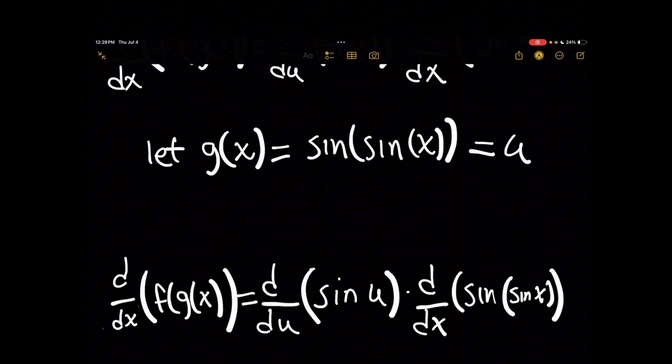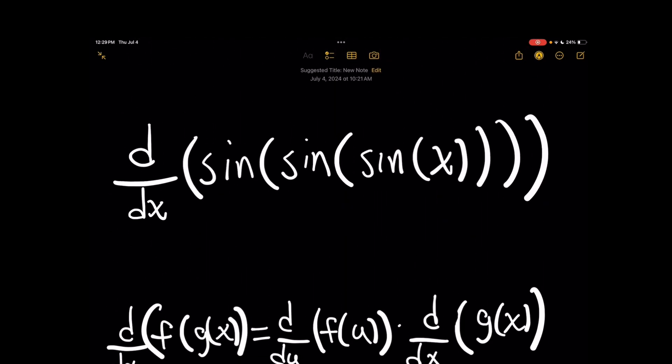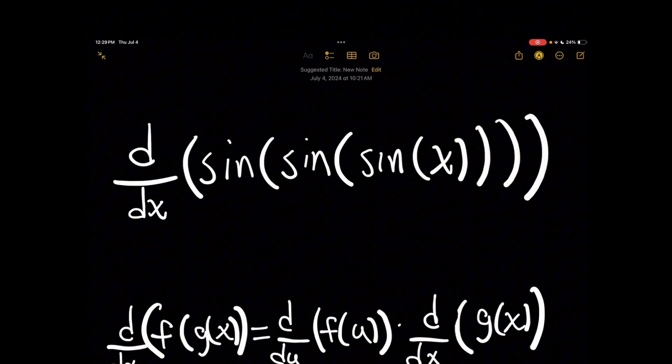So we're going to start with this upper layer, because if you look at the original problem, how much easier would this be where instead of the sine of the sine of the sine of something, we just had the sine of something, like a variable. And we're going to do just that.